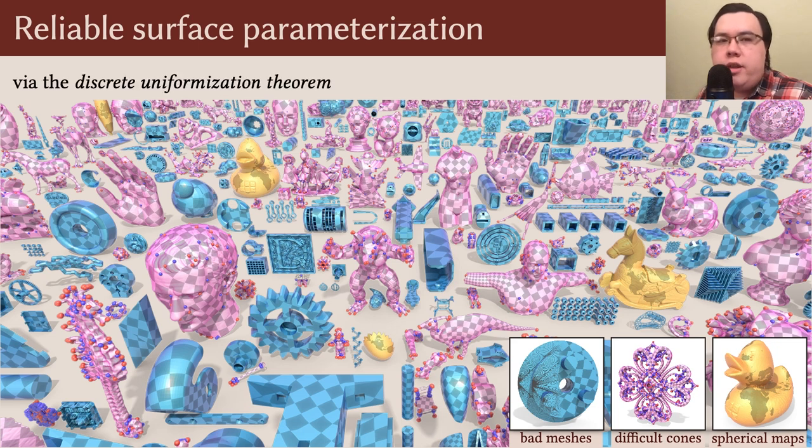All three are made possible by a recent discrete uniformization theorem, which essentially states that any triangle mesh with any choice of cones can be parameterized by a map which is discreetly conformal in an exact sense. However, even with this theorem in hand, there's still quite a lot of work that you need to do to apply it to meshes in practice.